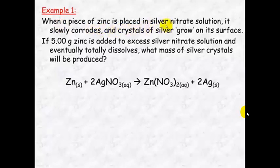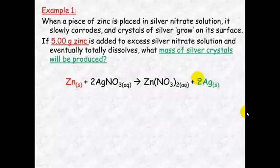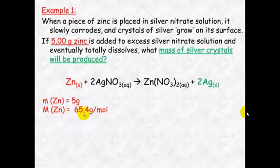When a piece of zinc is placed in silver nitrate solution, it slowly corrodes and crystals of silver grow on its surface. If five grams of zinc is added to excess silver nitrate solution and eventually totally dissolves, what mass of silver crystals will be produced? Five grams of zinc is our known species, and the mass of silver is what we're trying to find, so this becomes our unknown. We know the mass is five grams and the molar mass from the periodic table is 65.4 grams per mole.